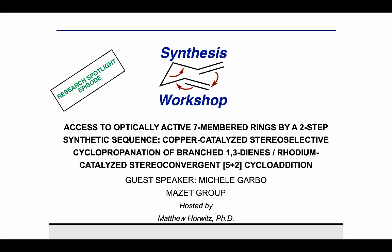The project I'm going to talk about is aimed at the synthesis of optically active seven-membered carbocycles, and it's based on the sequential combination of two reactions: the cyclopropanation of conjugated dienes and the 5+2 cycloaddition of vinyl cyclopropanes to alkynes. I will also show you how this synthetic approach is made possible by the peculiar stereochemical features of these two processes.